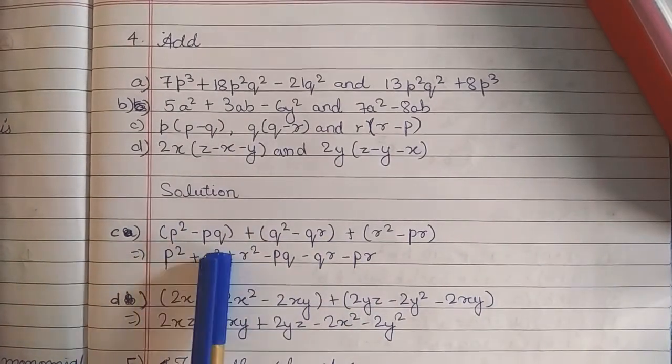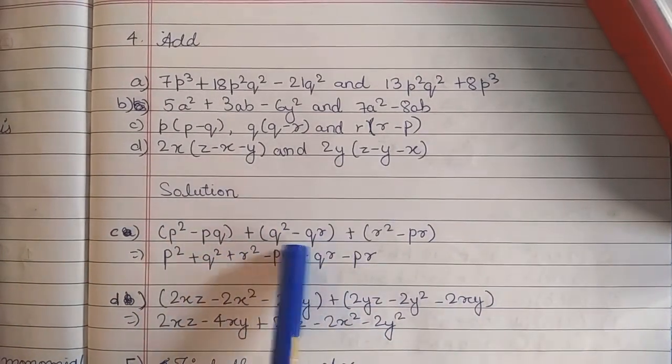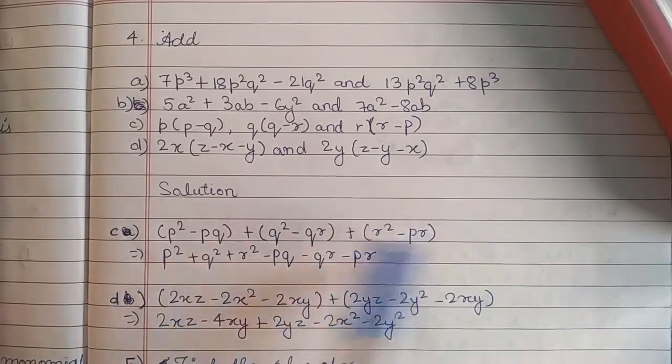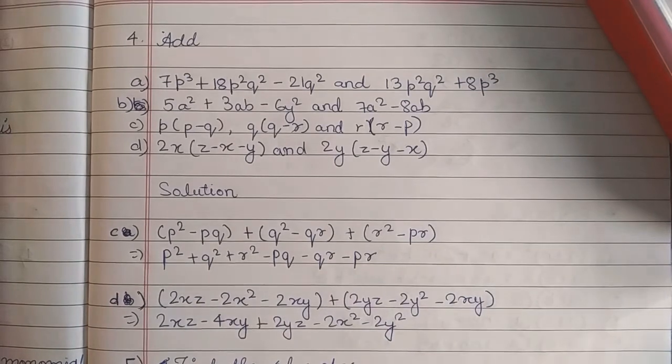So here as you can see, p² - pq + q² - qr + r² - pr. So the answer will be this.